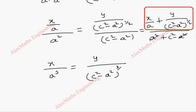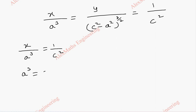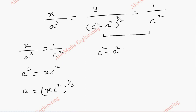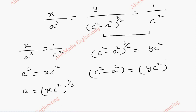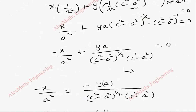Taking the first and last terms: x/a³ = 1/c², so a³ = x·c², giving a = (x·c²)^(1/3). Similarly, taking the other two terms and cross-multiplying: (c² - a²)^(3/2) = y·c², so c² - a² = (y·c²)^(2/3). We are now going to substitute these two results into the original line equation x/a + y/b = 1.